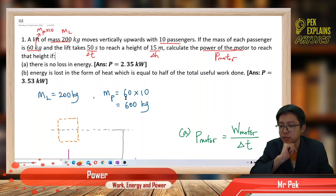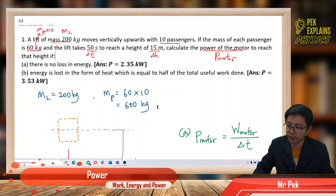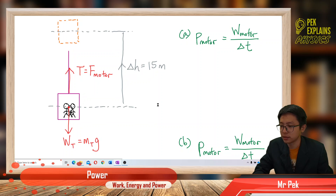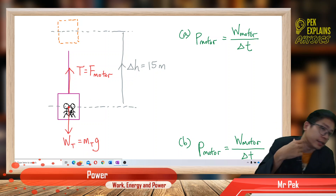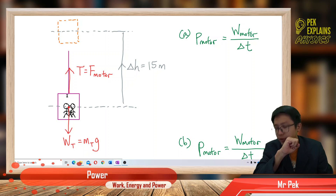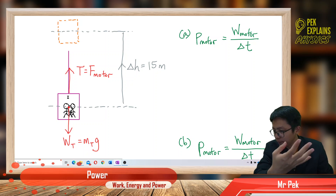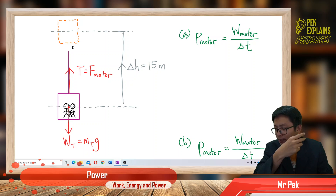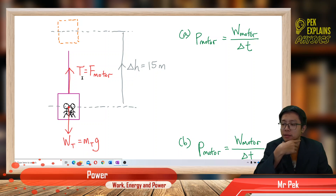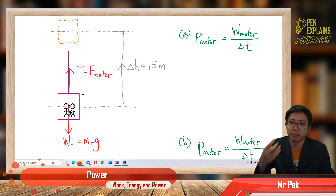The mass of the lift is 200 kilograms, and the mass of all passengers is 60 times 10, which equals 600 kilograms. Looking at the free body diagram, the total weight of the lift and passengers is W_total = m_total × g. To move upward, the motor must pull everything up, so the tension in the string equals the force exerted by the motor.